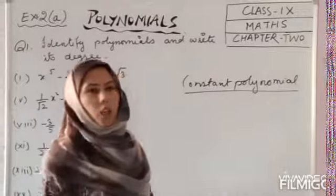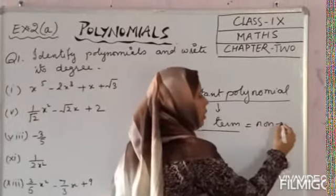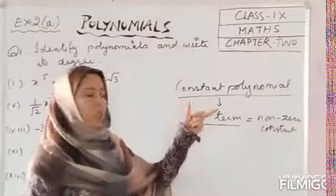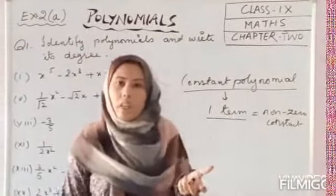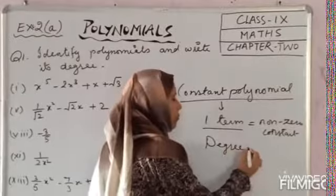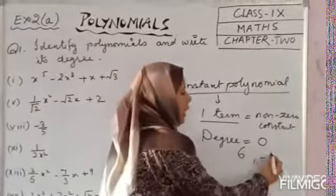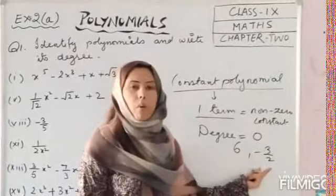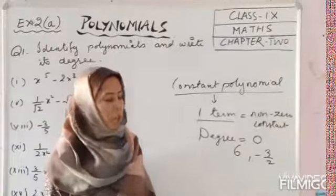Constant polynomials are those polynomials which have only one term, and that term is a non-zero constant — a numerical value which is not zero. Its degree is always 0. Examples are 6 and −3/2. Any non-zero constant can be a constant polynomial, and the degree of a constant polynomial is always 0.